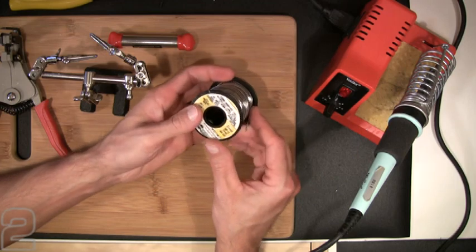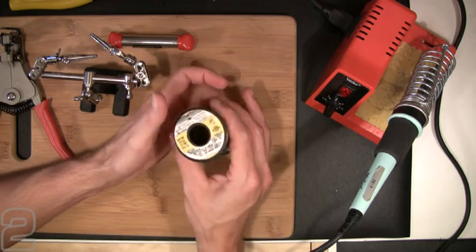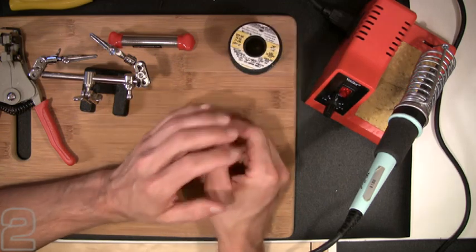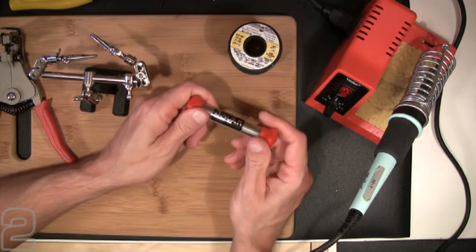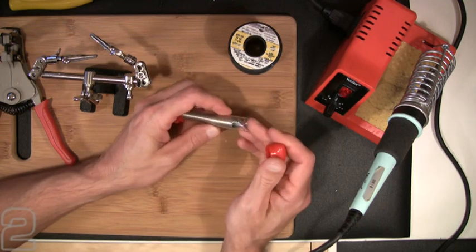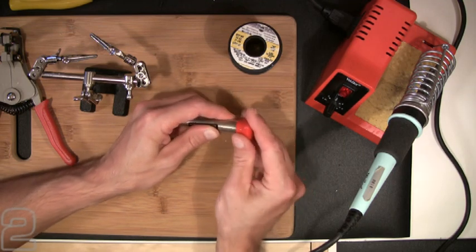So use a good rosin core solder. The solder is pretty much the key. As long as you have plenty of heat and a great solder, you'll have really good soldering experiences. There are a lot of different brands out there that are hobby specific. Novak makes a solder. There's a bunch of different manufacturers that offer rosin core solder appropriate for the types of connections we're doing.